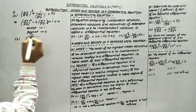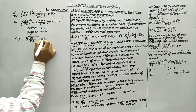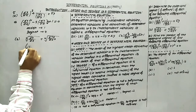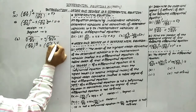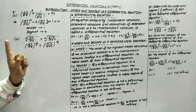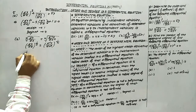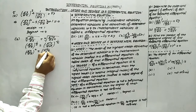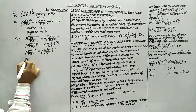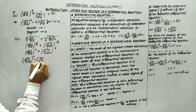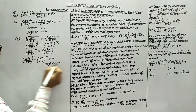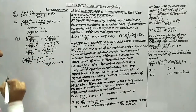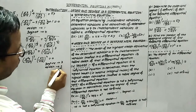In part B, we have the cube root of dy/dx equal to the fourth root of d²y/dx². Rewriting, this is (dy/dx)^(1/3) = (d²y/dx²)^(1/4). To eliminate fractional powers, take the LCM of 3 and 4, which is 12, and raise both sides to the power 12. This gives (dy/dx)⁴ = (d²y/dx²)³, or equivalently (d²y/dx²)³ − (dy/dx)⁴ = 0. This is a polynomial equation in the derivatives, so degree is defined. The highest-order derivative is d²y/dx², so the order is 2. The power of d²y/dx² is 3, so the degree is 3.